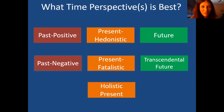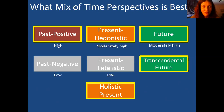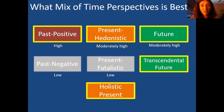So based on all these things, what time perspective is best? The research found that the healthiest ones are: past positive (relatively high), present hedonistic (moderately high), and future orientation (moderately high). Past negative and present fatalistic aren't really good for much of anything and don't have positive impacts on us. They also have less research on transcendental future and holistic present, but generally feel those are positive orientations too if used the right way.